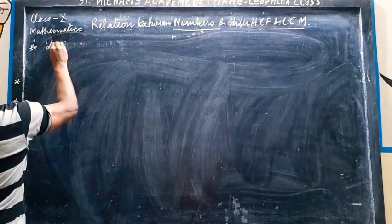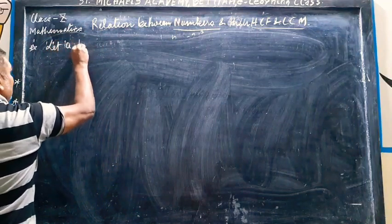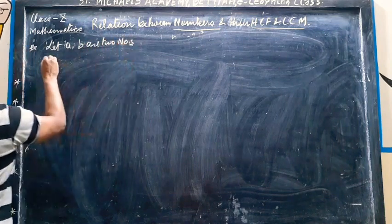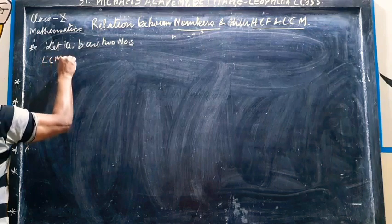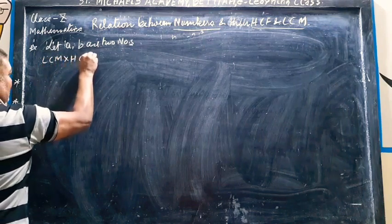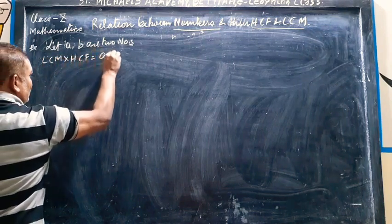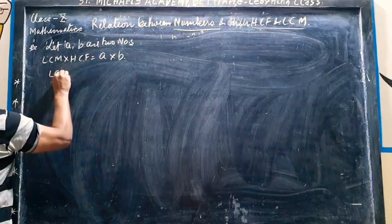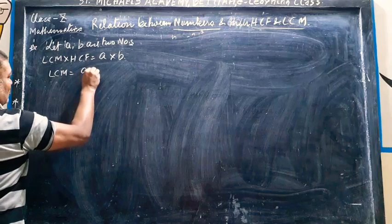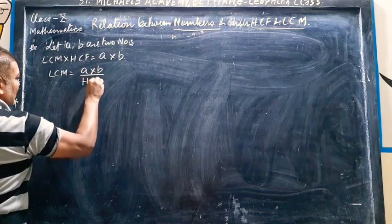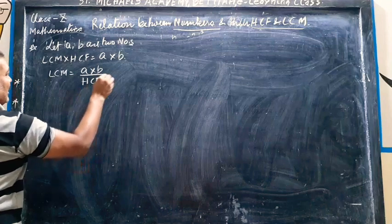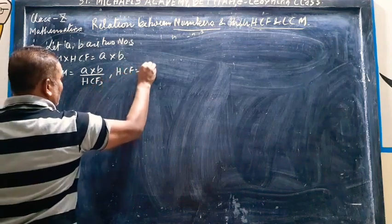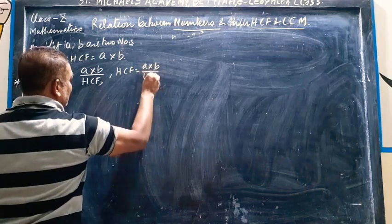Now, we have two numbers A and B. So LCM into HCF of these two numbers is equal to product of these numbers. From this, we can get that LCM is equal to product of the numbers divided by HCF, and HCF is equal to product of the numbers divided by LCM.